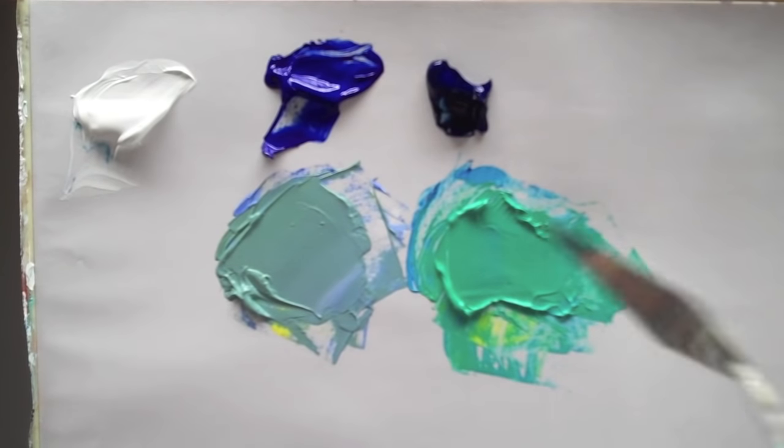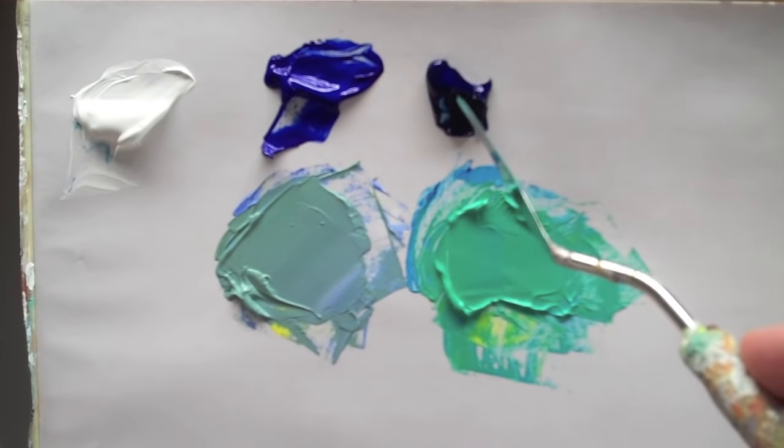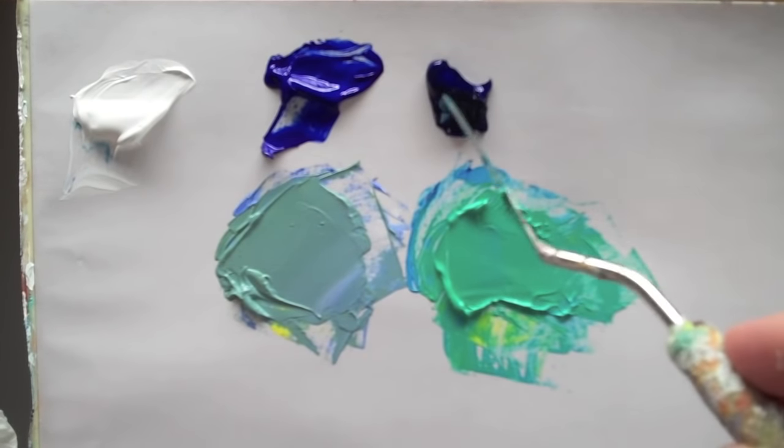You can see how the green on the right is a lot brighter or a lot cleaner green. Even though initially when we look at the mass tones, this looks a lot darker.